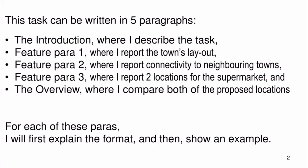This task can be written in five paragraphs: the introduction, where I describe the task; feature para 1, where I report the town's layout; feature para 2, where I report connectivity to neighboring towns; feature para 3, where I report two locations for the supermarket; and the overview, where I compare both of the proposed locations. For each of these paragraphs, I will first explain the format and then show an example.